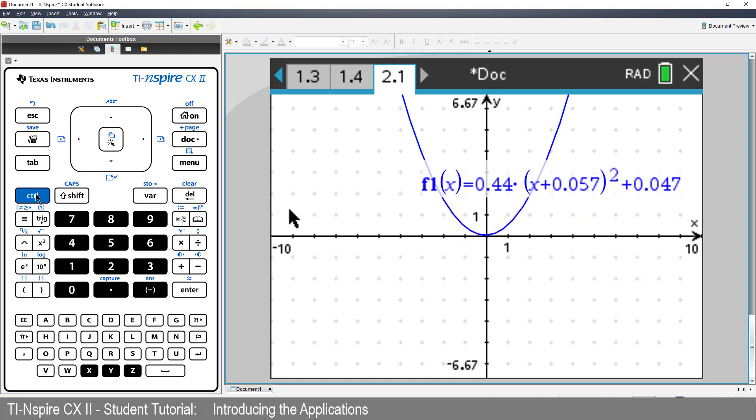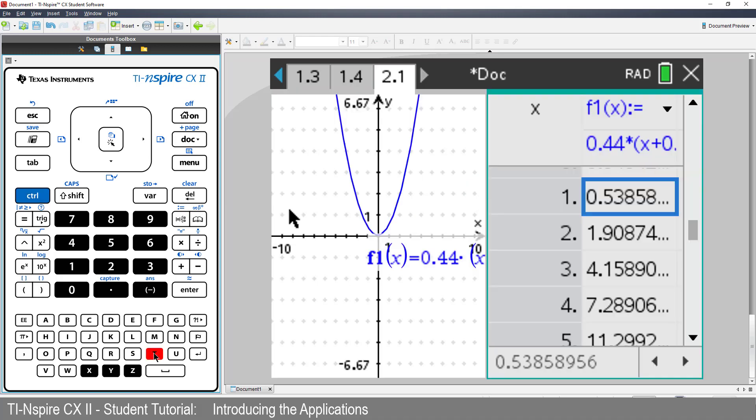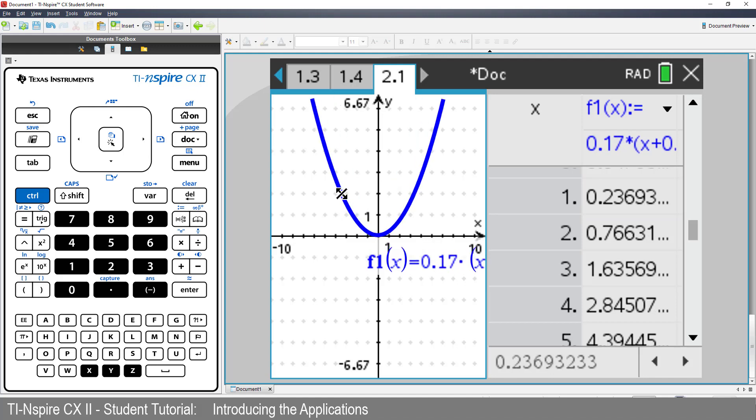To see a table of values, press Ctrl followed by T. Now grab and flex the graph again. Even the tables are dynamic.